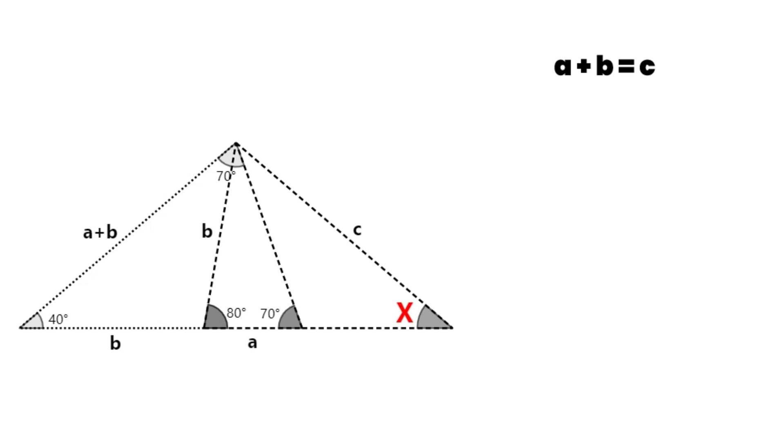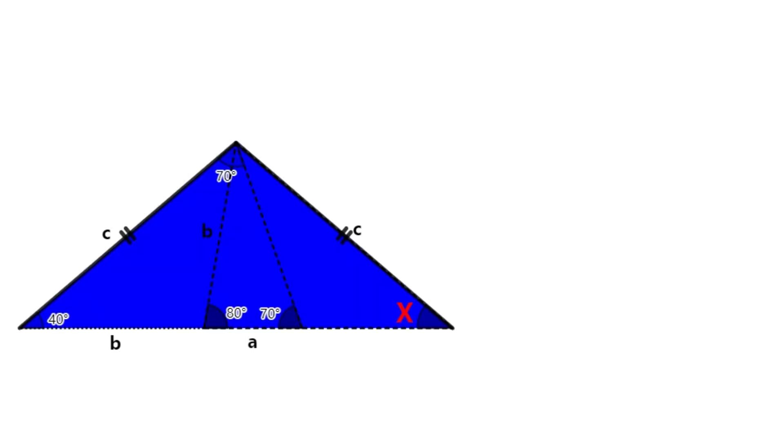Because A plus B is equal to C, we get that the big triangle in the graph is also an isosceles triangle.